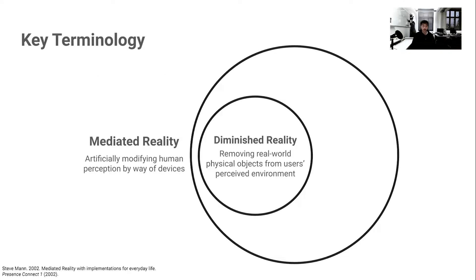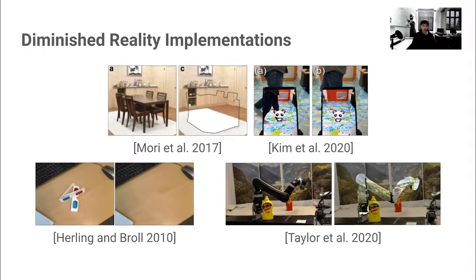So what is diminished reality? Diminished reality is a term coined by Steve Mann that falls under his mediated reality framework. Mediated reality refers to the idea of artificially modifying human perception by way of devices. To understand this more concretely, we can look at several examples from prior work.